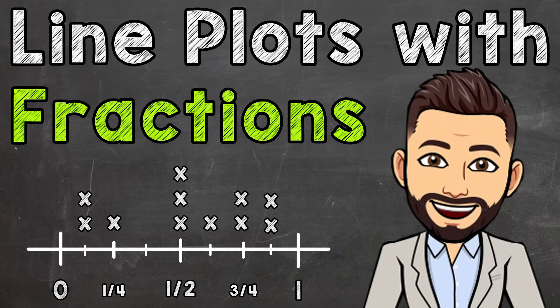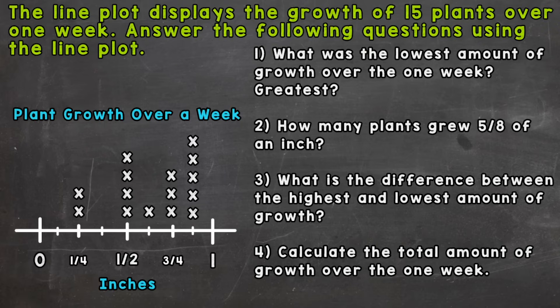Welcome to Math with Mr. J. In this video, I'm going to cover how to interpret or read a line plot that includes eighths, fourths, and halves. If you take a look at the left side of your screen, we have a line plot there. Up at the top of your screen, we have a situation that will talk about what that line plot represents, and then we're going to answer some questions that go along with it. The line plot displays the growth of 15 plants over one week.